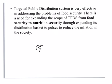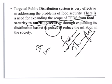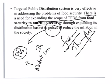After writing measures, we have to write a conclusion. A good introduction and a good conclusion are necessary for a good answer. The conclusion should be futuristic and thought-provoking. Here, there is a need for expanding the scope of TPDS from food security to nutrition security by expanding the distribution basket to include pulses. Including pulses not only reduces inflation in society but also ensures nutrition security. This is how the conclusion should be futuristic and thought-provoking. This is all about this session's question and answer. Thank you.